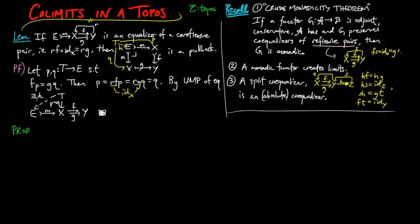We use this result to prove that the power object functor P is monadic. We have shown that P is adjoint and conservative a few videos back. We also have E has finite limits by definition of being a topos,